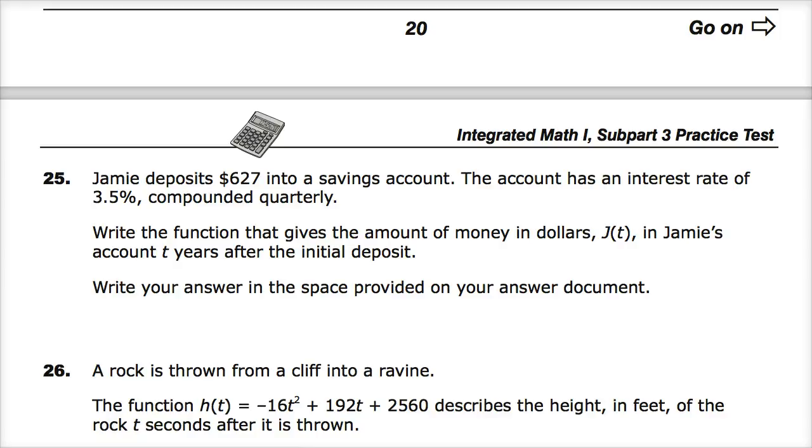Jamie deposits $627 into a savings account, which is a really weird amount to put in. The account has an interest rate of 3.5% compounded quarterly, so I probably should be using my highlighter. There's something important, very important, it's easy to miss. Write the function J(t) in Jamie's account, t years, that matters too, after the initial deposit.